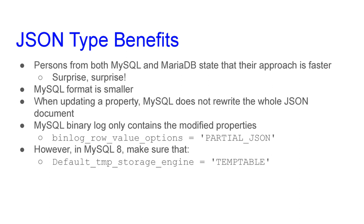In MySQL 8, you should make sure that the default storage engine used for internal temporary tables is the default, unless you upgrade. That is because the old storage engine for internal temporary tables in previous versions was MEMORY, which does not support JSON. As a consequence, when you run a query needing an internal temporary table, MySQL will need to write that table to disk, which is slower. MariaDB doesn't have this variable, but it also doesn't have this problem because MEMORY in MariaDB supports the JSON type — simply because it uses strings.